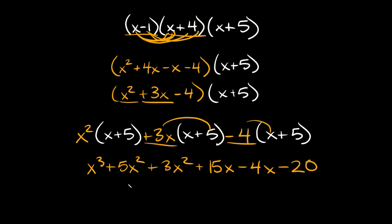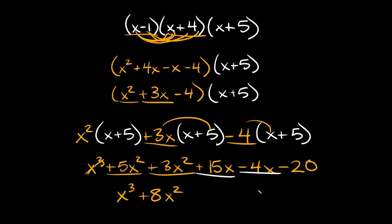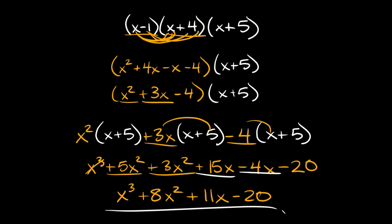Now combine like terms: x cubed is the only cubic, so that stays. For x squared: 5 plus 3 equals positive 8x squared. For x: positive 15 minus 4 equals positive 11x. And then minus 20. Nothing left to combine, so your final answer is x cubed plus 8x squared plus 11x minus 20.